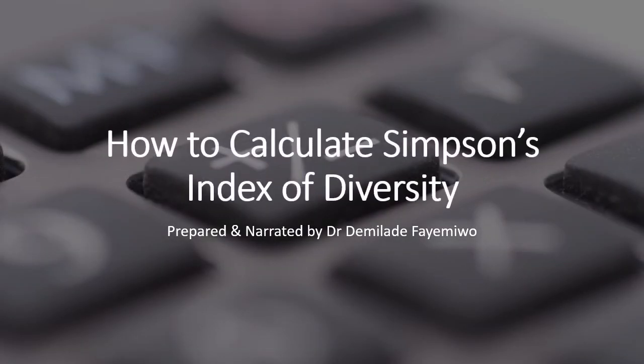Hello everyone, welcome back to AS and A-level biology with Dr. Demi. I'm Dr. Demi and in this video I want to show you how to calculate Simpson's index of diversity. This is one of the calculations you will encounter in your chapter 18 questions. So I just thought to do a separate video to show you how it works and also I have an example from an exam paper just to let you see how CIE would typically pose this question to you in the exam so that you're prepared for it.